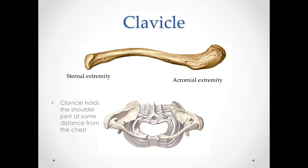Clavicle, clavicula. It is an S-shaped curved long tubular bone. It consists of the body, sternal and acromial extremities. The clavicle holds the shoulder joint at some distance from the chest. Here is the acromial extremity of the clavicle and the sternal extremity of the clavicle.